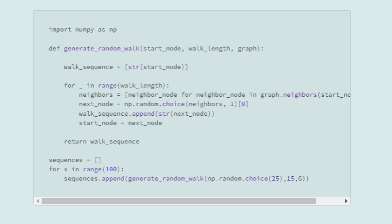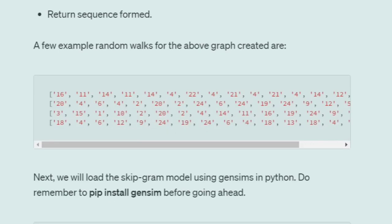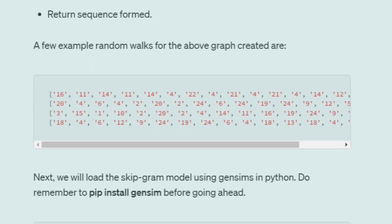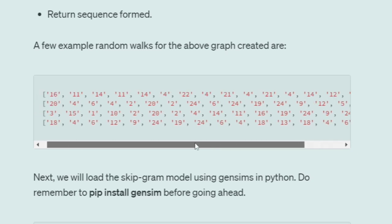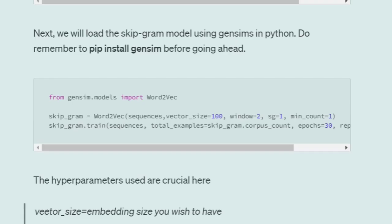We repeat for walk length 15 for each sample. Once done with 100 samples, you can see sequences like: 16, 11, 14, 11, 14, 4 — and looking at the graph, 16-11, 11-14 are connected and randomly selected. Nodes can be revisited; for example, 11 appears twice. We are not restricting already-visited nodes, so if they come up in randomly selected options, they are included. This gives us sequences of length 15 used as training data.